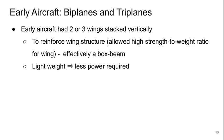Going back to early aircraft such as the Wright Flyer, it was very common to have biplanes and triplanes. The Wright Flyer was a biplane, meaning it had multiple wings stacked vertically — biplane meaning two, triplane meaning three. The reason this was done was to reinforce the wing structure. It allowed for a very high strength-to-weight ratio for the wing, basically turning the wing into a box beam. This allowed for reduced weight, so less power was required for the propulsion system.